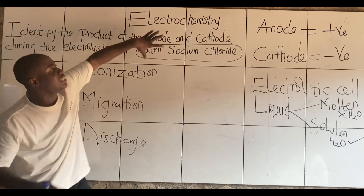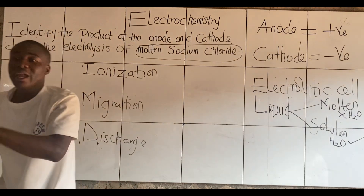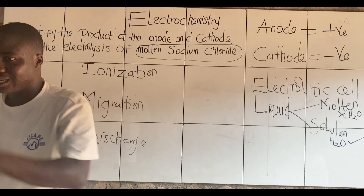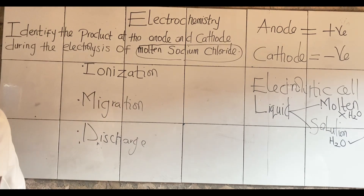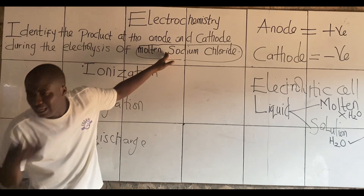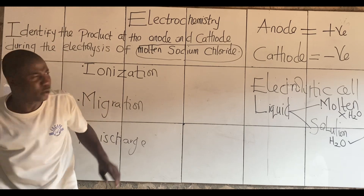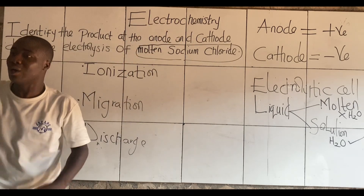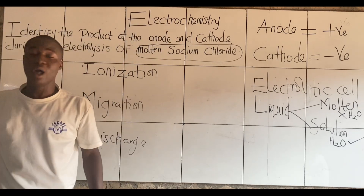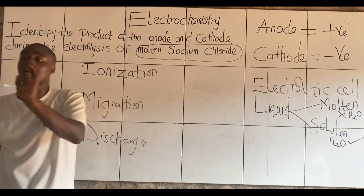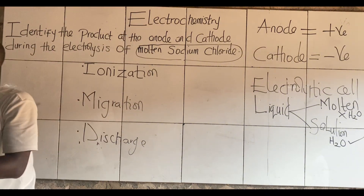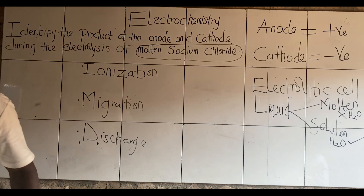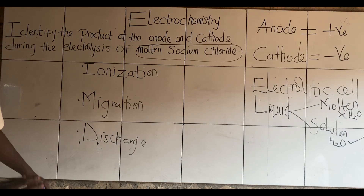So looking at this, because this compound — is this not a compound? Yes. So if this is a compound, this is the electrolyte. I told you guys electrolytes are compounds always. This is the electrolyte, what to break now. In electrochemistry, we don't call it break, we call it decompose. We want to decompose.